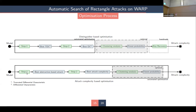Our new model works in two main steps. In the first step we compute an approximation of our attack complexity. In the second step we refine our results and ensure that the attack complexity given is the best computable by our model. We can then add clustering analysis to refine the distinguisher probability and improve the accuracy of our attack complexity.